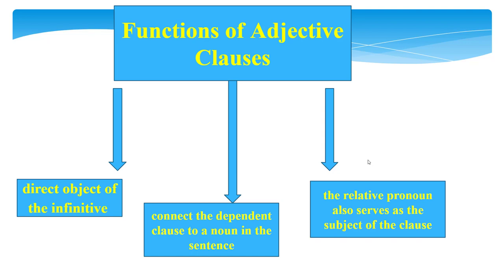Relative adverbs connect the dependent clause to a noun in the sentence, and they modify the verb in the dependent clause. Examples: 'That is the bench where you and I were supposed to meet.' '6 o'clock was the time when we were supposed to be there.' 'That is the reason why I couldn't meet you.'